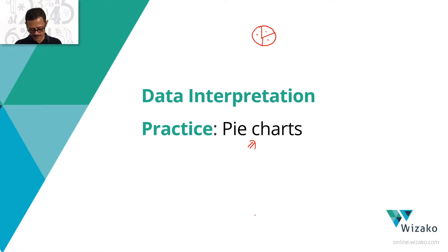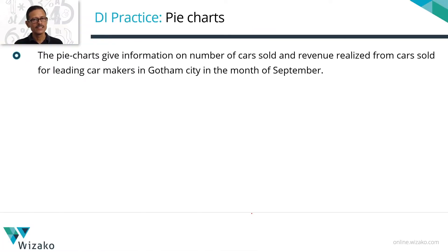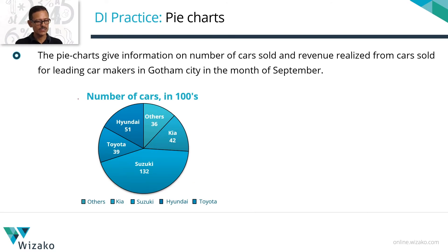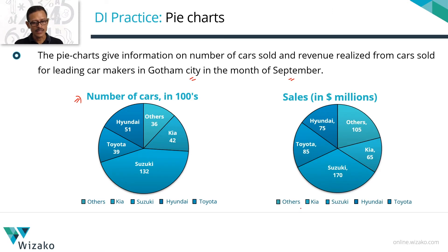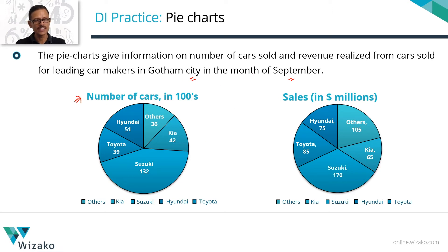Let's start with two very simple pie charts. The first gives us the number of cars sold in a particular city in a particular month. The second tells us the revenue made by selling these cars in dollar terms — a breakup of four manufacturers and an 'others' category in Gotham City for September, both by number of cars and by dollar value.